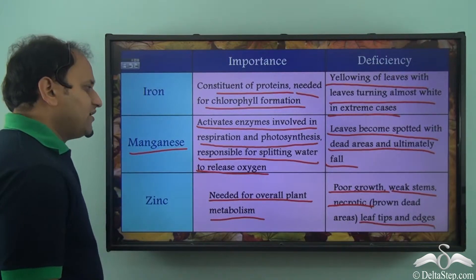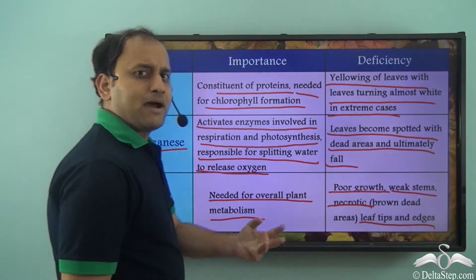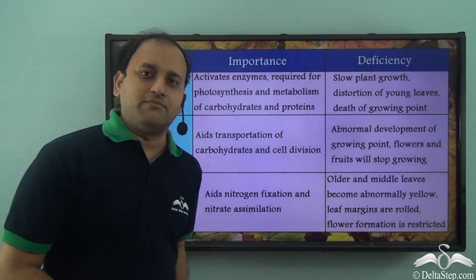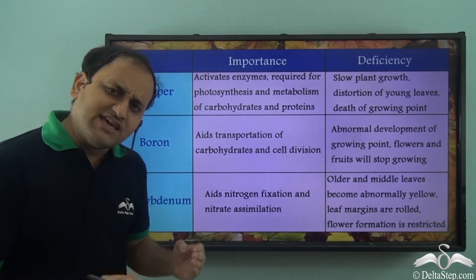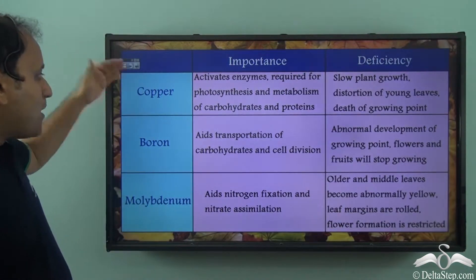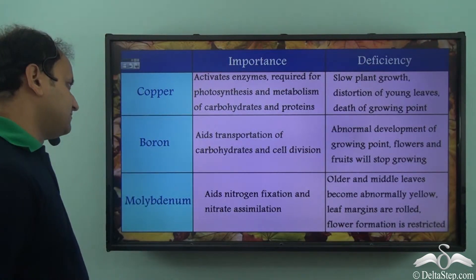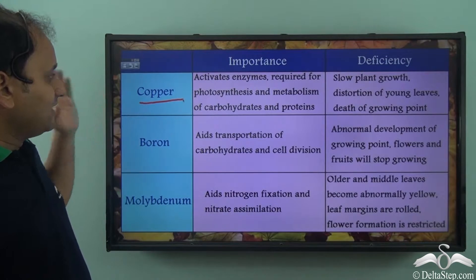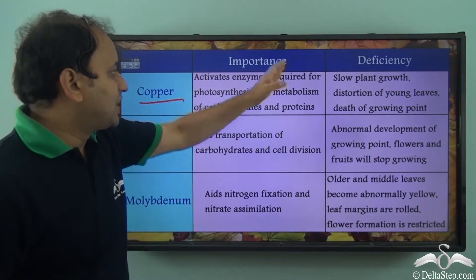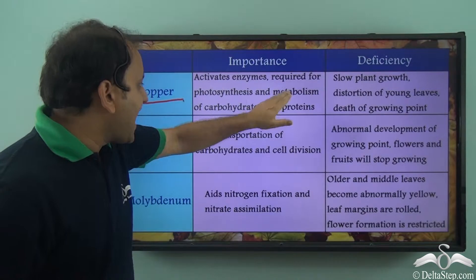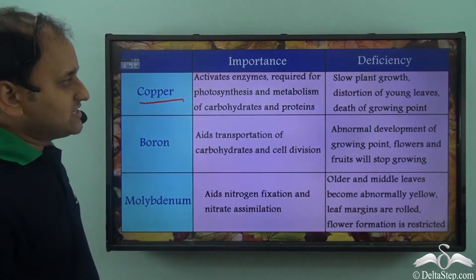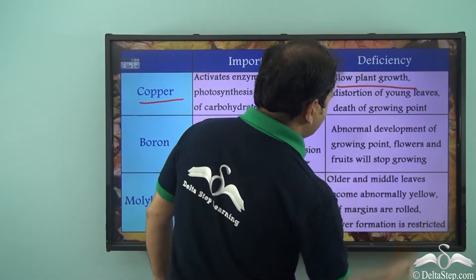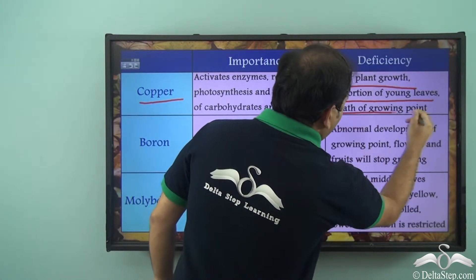Apart from these three, let's discuss three more trace elements required in plants in very small quantities: copper, boron and molybdenum. Copper activates enzymes required for photosynthesis and metabolism of carbohydrates and proteins. The deficiency symptoms are slow plant growth, distortion of young leaves, and death of growing point.